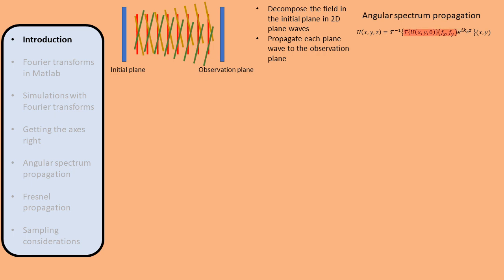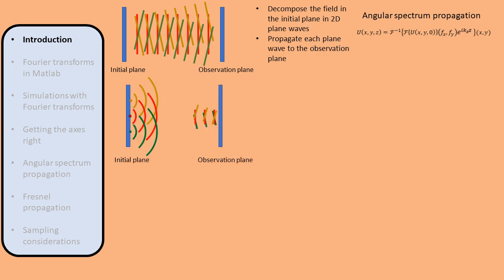The first Fourier transform decomposes the initial field into plane waves. To propagate the plane waves, we multiply each plane wave by a complex phase factor, and then take the inverse Fourier transform to add all the propagated plane waves back together. The second way to understand propagation of a field is by using Huygens' principle.